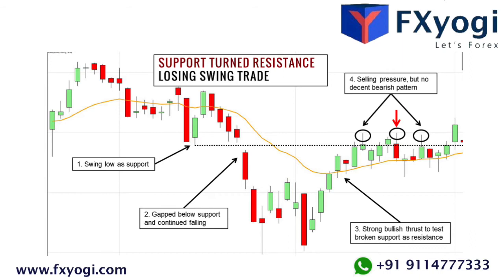There are two ways to play breaks in forex trading: the aggressive way or the conservative way. The aggressive way — the simplest way to play breakouts is to buy or sell whenever price passes convincingly through a support or resistance zone. The keyword here is convincing, because we only want to enter when price passes through a significant support or resistance level with ease.